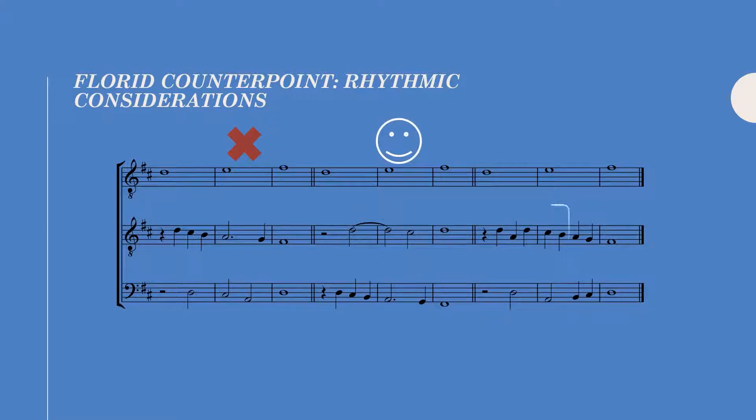Example three is also okay because beat two, while not marked in the bass, is marked by the B in the alto. So remember, there has to be a constant rhythmic flux going on at all times.